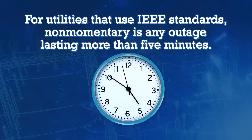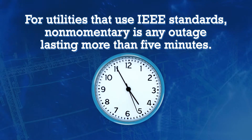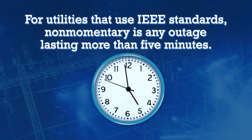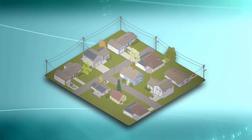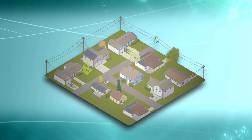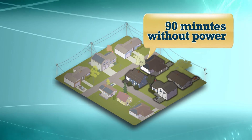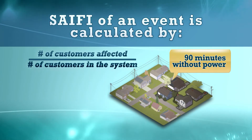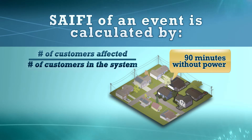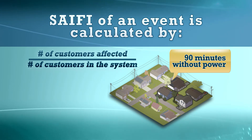The SAIFI and SAIDI collected are yearly summed values of all non-momentary outages. For utilities that use IEEE standards, non-momentary is defined by any outage lasting more than five minutes. SAIFI of an event is calculated by the number of customers affected divided by the number of customers in the system, or the percent of customers affected.